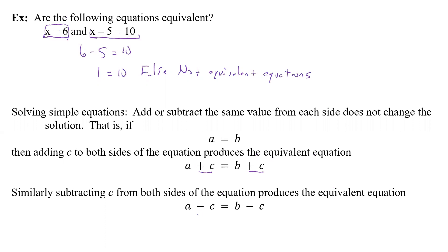We can also subtract the same thing from both sides. Subtracting c from both sides also gives an equivalent equation, because we'll come back to some x equals 6 as our solution, showing that adding or subtracting the same thing from both sides keeps the solution set the same.